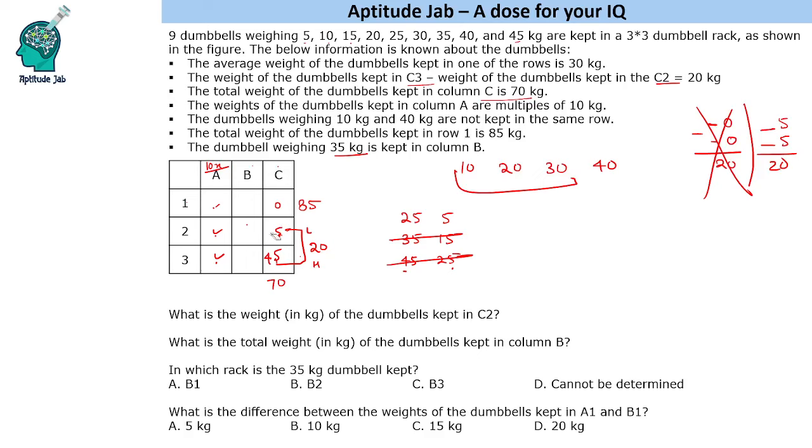So we have 5 and 25. So these two values are 25 and 5 kg. So this is done. Now this is 30. So 30 plus 40 makes it 70. So 70 is done.